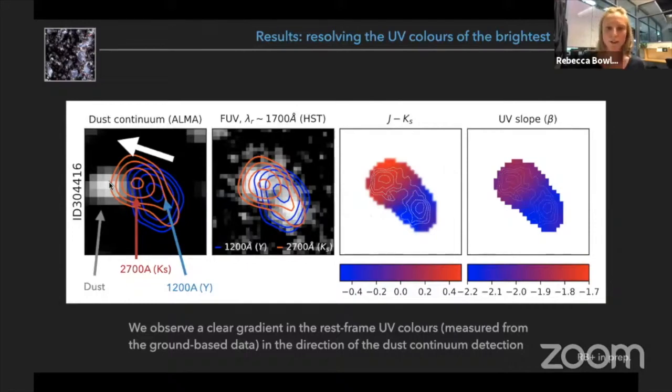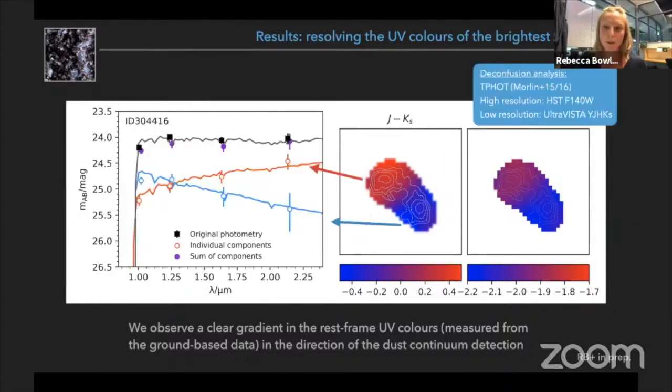So you can see that we observe this clear gradient in the rest frame UV colors and it appears to be pointing in the direction of the dust continuum detection as you might expect. So this was really exciting and I went one step further to extract photometry for each clump.